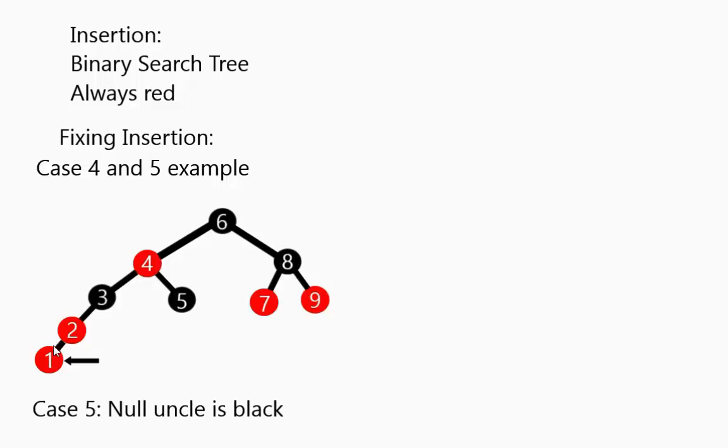The null uncle is still black, so we have case 5 where we have them both to the left of the grandparent. So we do the tree rotation through the grandparent. The parent, this 2, used to be red, now it's black. This 3 was a grandparent, it moved down to the right and is now red.